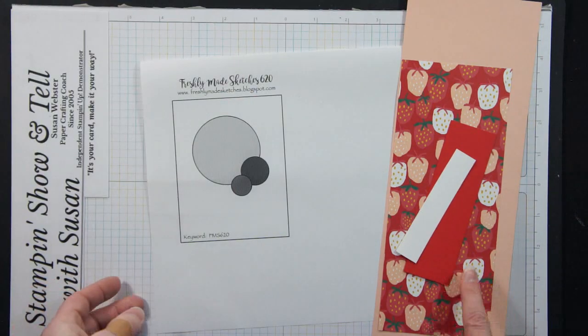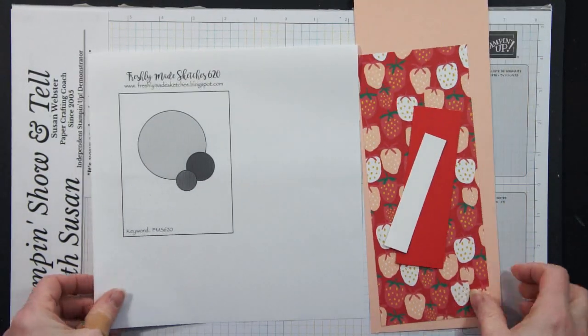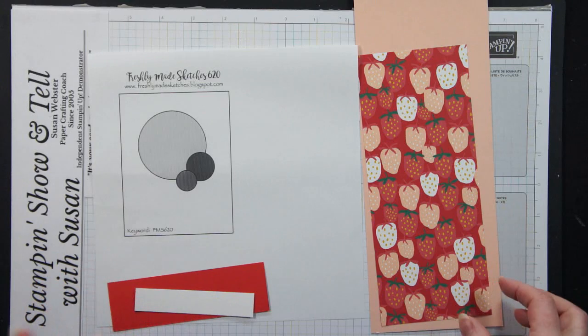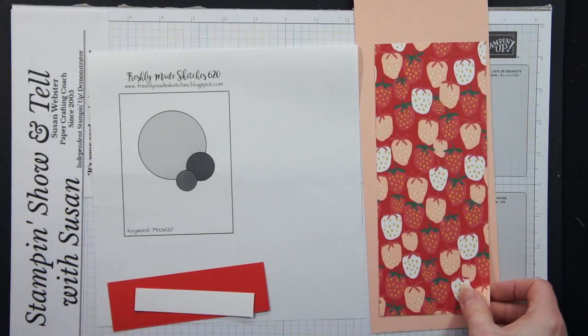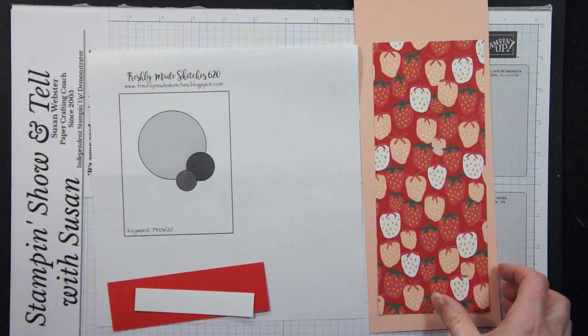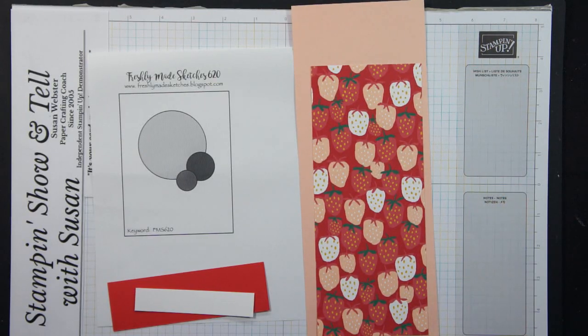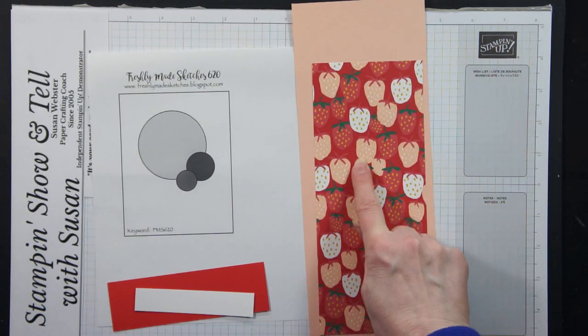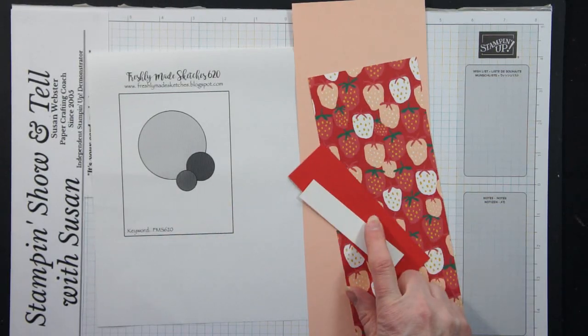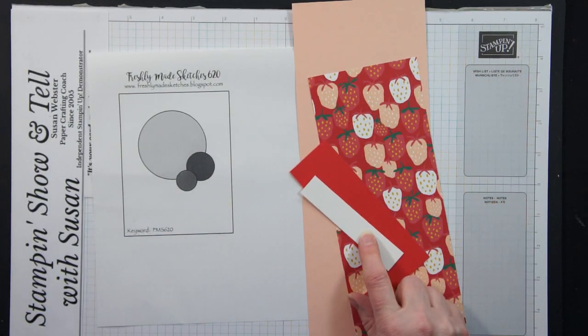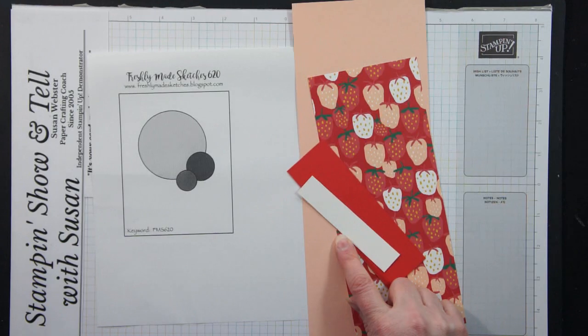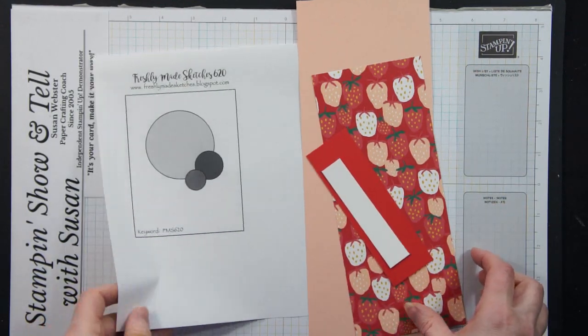Okay so we're going to be using this print paper with the strawberries on it. I thought it was fun and festive and bright and cheery because it's kind of gloomy weather right now being winter time here in New York. So I've paired it with petal pink which is the color here and also with poppy parade and basic white so those are my three basic colors that I all pulled from the designer series paper.